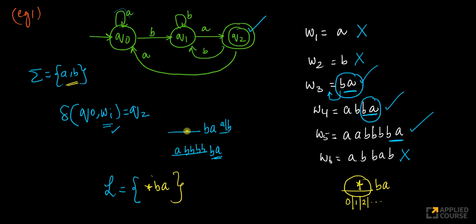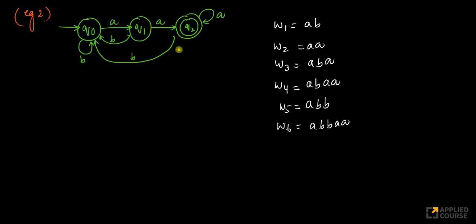Let's look at another example. If I have this finite automaton, what does this accept? I am in the initial state. What is the simplest string it will accept? If I have a followed by a, it accepts. A followed by b — it doesn't accept.